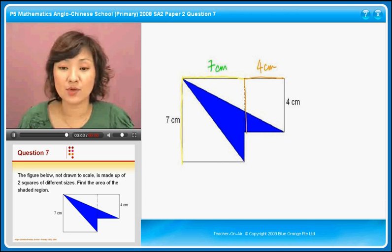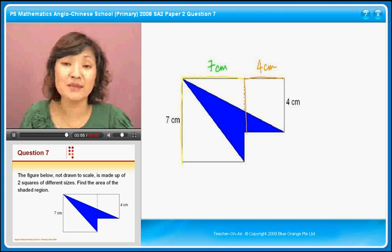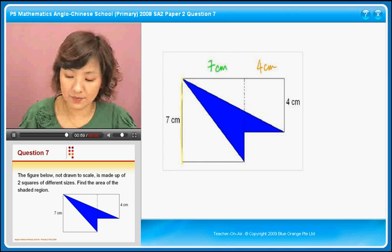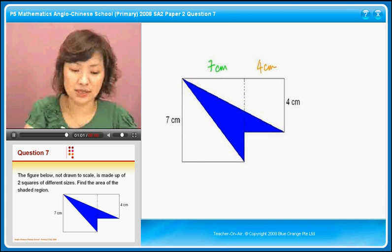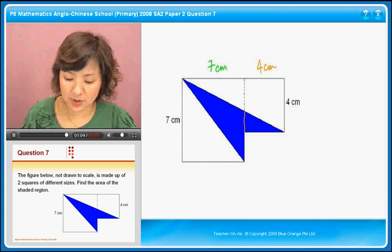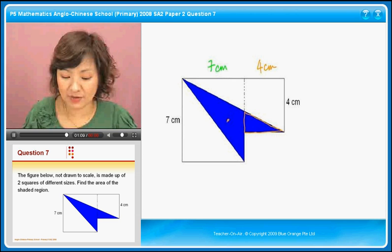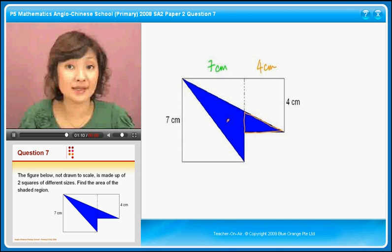Then you've got to ask ourselves, from the shaded part, can I make other figures? It's very tempting for us to now look at, there's one triangle here. So if I can find the area of this triangle, and I find the area of this triangle, I'll be able to get my answer. So that sounds like it.